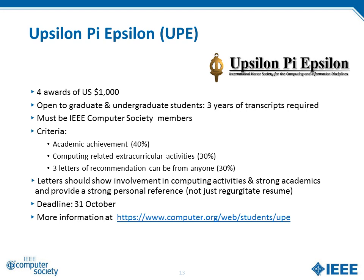The criteria are about 40% academic achievement and 30% computer-related activities, which don't necessarily have to be Computer Society or IEEE activities. Three letters of recommendation are required and could be from anyone, but they should really be someone who knows you well — your academic advisor or someone familiar with your professional activities and the papers and projects you've worked on. Among the three letters, they should show involvement in computing activities and strong academics, and provide a strong personal reference, not just regurgitating your resume. The deadline for this award, as well as the Larson Award, is October 31st. More information is at www.computer.org/web/students/UPE.